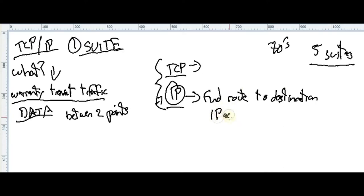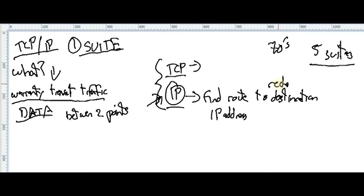IP finds the route using an IP address. It seems complicated, but after this video you will understand how easy it is. The IP part of the TCP/IP suite helps us find the route to reach the destination — using an IP address.